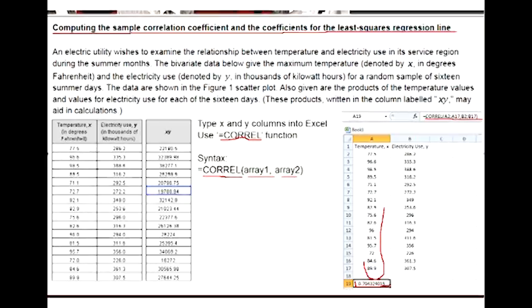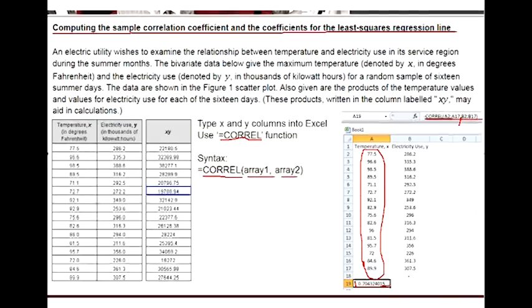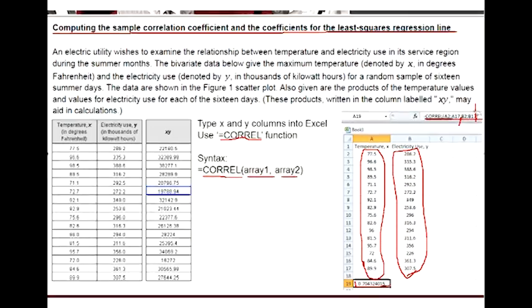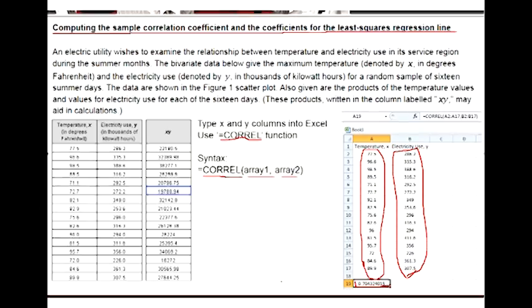So A2 comma A1, that is the first column. We just highlighted the same way we did the previous one, comma B2 to B17, which is this other column of data. Close the parentheses, and then when you hit enter, we get 7043.